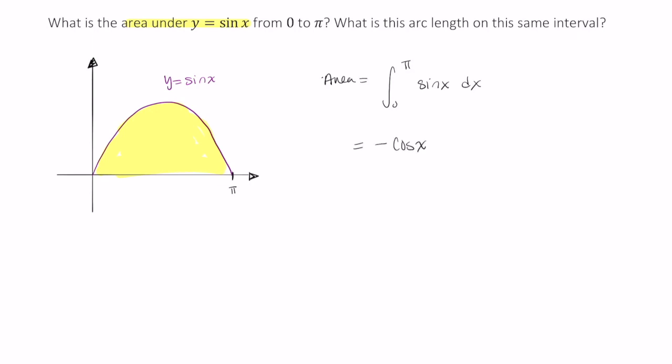Evaluating we get negative cosine of x evaluated from 0 to π. This is just negative cosine of π minus cosine of 0, so negative negative 1 plus 1, and that equals 2. So this yellow highlighted region is 2 square units.